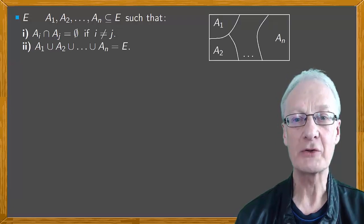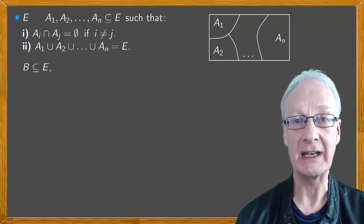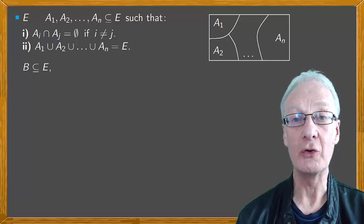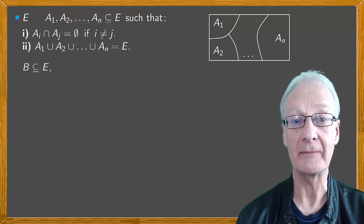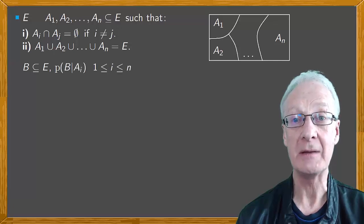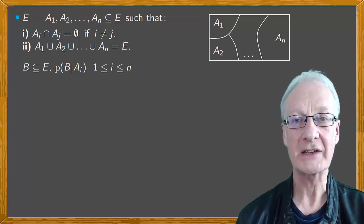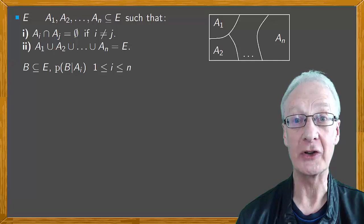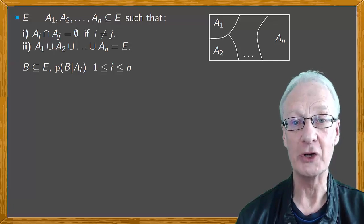Now suppose that for each subset, we know the probability that an event B will be satisfied. Expressed in the language of probability, we know the probability of B occurring in each Ai — that is, we know the conditional probabilities P(B|Ai). We might ask ourselves: what's the probability that event B occurs in the whole set? In other words, we want to calculate P(B).